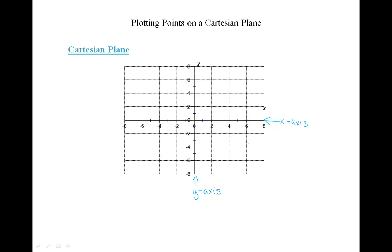The Cartesian plane is divided into four quadrants as follows. This is Quadrant one. This is Quadrant two. This is Quadrant three. And this is Quadrant four.